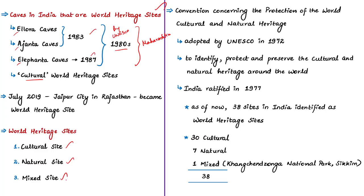Under this convention, UNESCO aims to identify, protect and preserve cultural and natural heritage around the world. Sites are identified based on their outstanding universal value and if they meet at least one of ten selection criteria. One criterion is that the site must be an outstanding example of architectural or technological landscape illustrating significant stages in human history. Based on this convention, world heritage sites are listed by UNESCO and become part of UNESCO's World Heritage List.